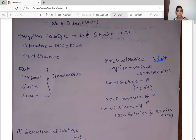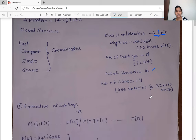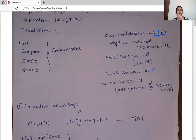Now let's briefly discuss the overall process. First we need to generate the key, then we need to initialize the S-boxes. After that we encrypt the data, and finally we decrypt it. We will go through each of these steps now.